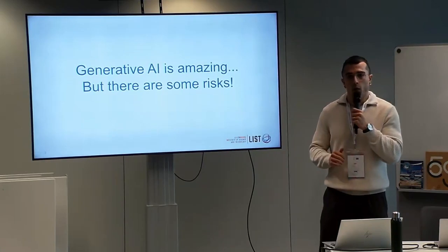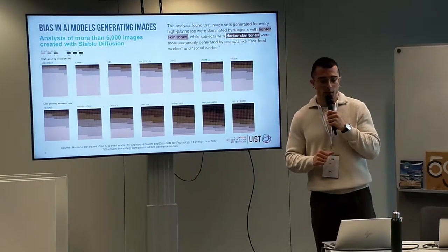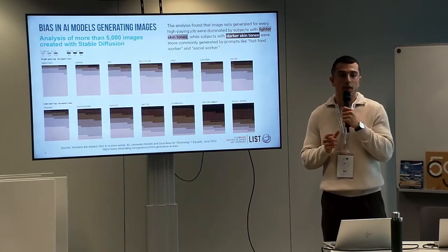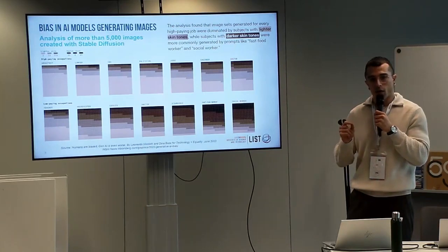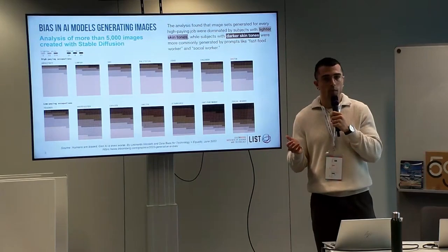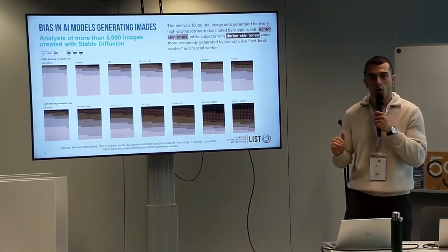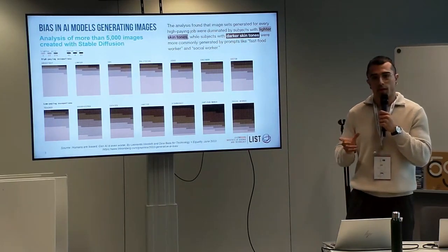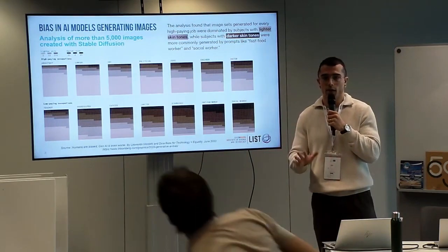We all know generative AI is very cool, but it also comes with some potential risks for society. This first example was an experiment where Stable Diffusion users generated more than 5,000 images, and the study was about labeling the skin color of the people generated in the images. Surprisingly, jobs with higher income or higher status were more related to lighter skin tones, while jobs with less income or less status were more associated with darker skin tones, as you can see in the figure. This proves that the models used for Stable Diffusion were exhibiting some kind of bias, whether or not it reflects reality.